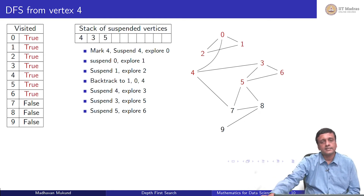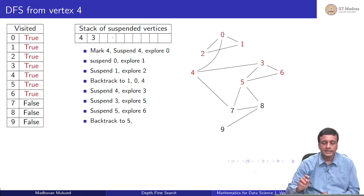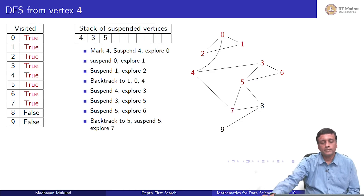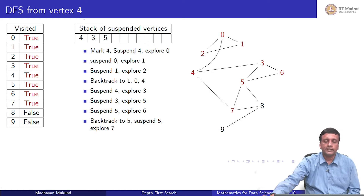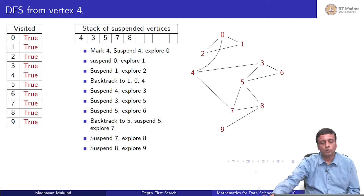6 has no new neighbors to explore because both 3 and 5 are already visited. So I backtrack from 6 to 5 and ask whether 5 has anything more to do. Well, 5 has 7 and 8 remaining. So I suspend 5 again to explore 7. 7 has a neighbor 8, so I suspend 7 and explore 8. 8 has a neighbor 9, so I suspend 8 and explore 9.